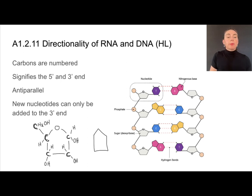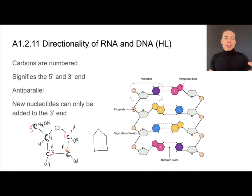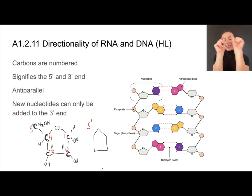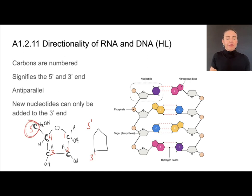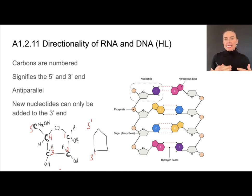These carbons are actually numbered. The numbering system goes like this: carbon number one, two, three, four, and five. Because they are numbered, that tells us there's a five prime end — I like to think of that as almost like the top of the house — and a three prime end. So five prime and three prime relate to the five and the three carbons. This is really what we mean when we say anti-parallel.